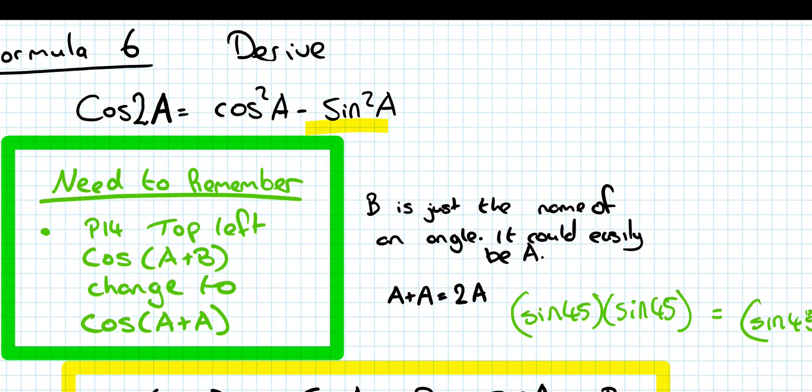So here, remember, B is just the name of an angle. It could easily be A. And the key point is it doesn't matter that it's called B. A and B could be the same thing, which is what we're getting at here.